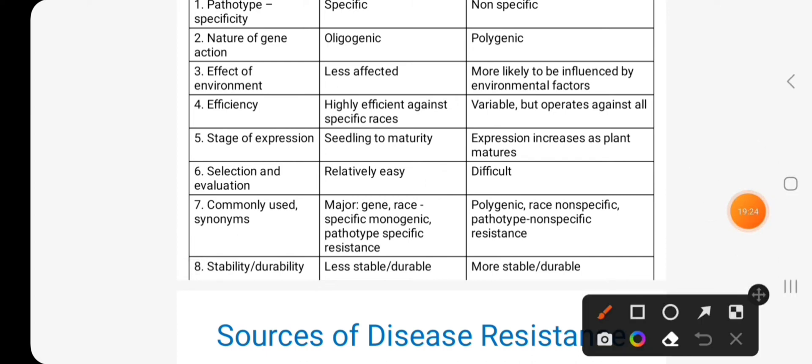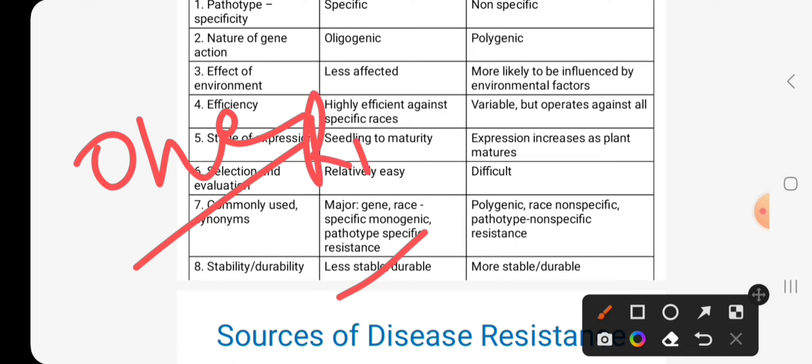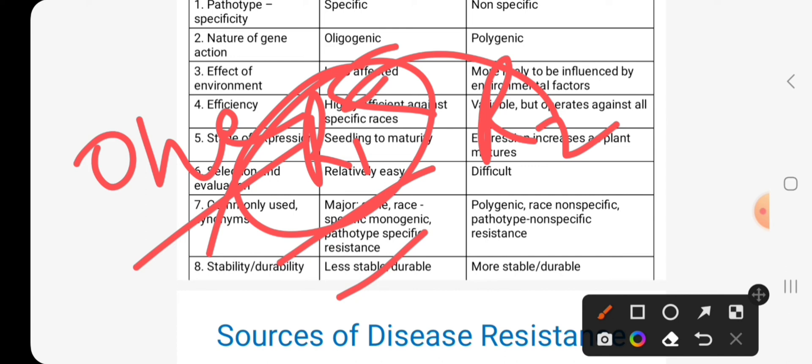Vertical resistance is less stable since it is governed by only one gene or few genes. If it is resistant to race 1 and there is development of race 2, then it will damage the host that is resistant to race 1.